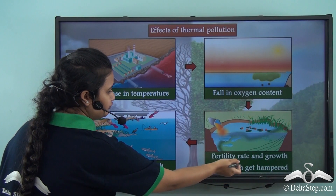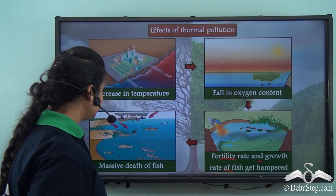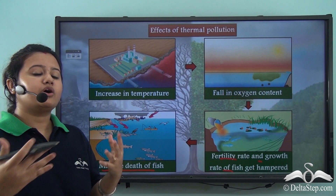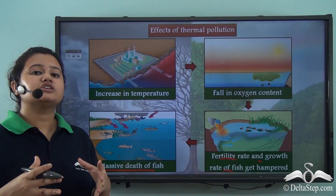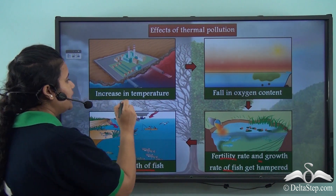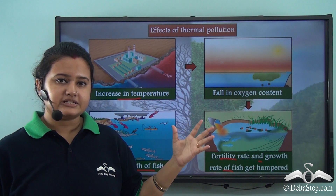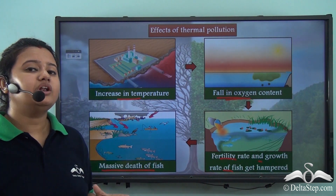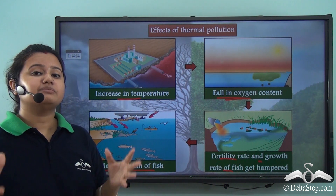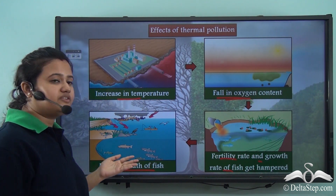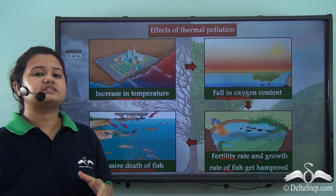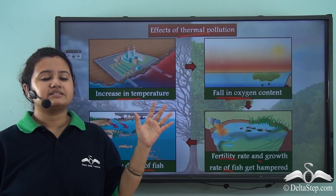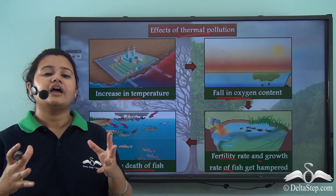The decrease in fertility rate and growth rate of fishes eventually leads to massive death of fishes. In fact, thermal pollution may also lead to extinction of marine life, because marine animals cannot tolerate the sharp increase in temperature, and the fall in oxygen content — a vital gas for all living organisms — directly affects marine life. This is the pictorial representation of the entire effect of thermal pollution on the aquatic ecosystem.